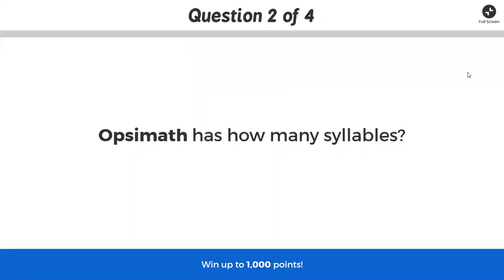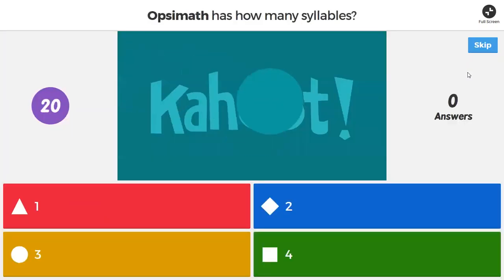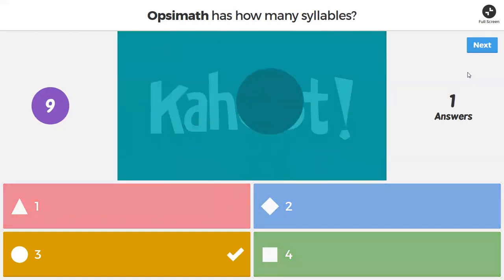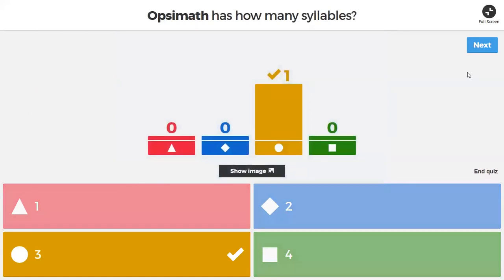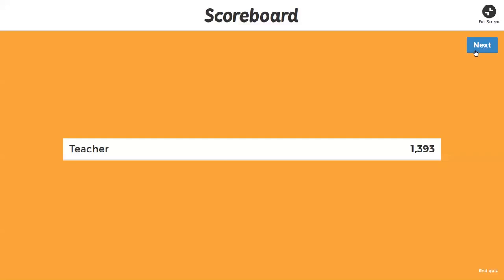So we still don't know what opsimath means, but we've played with it and now we're just trying to figure out how many syllables. So we can just say the word opsimath, op-si-math, three syllables. So we have our students really looking at the letters, saying out the syllables. So their mind is really processing this word, whatever it means.